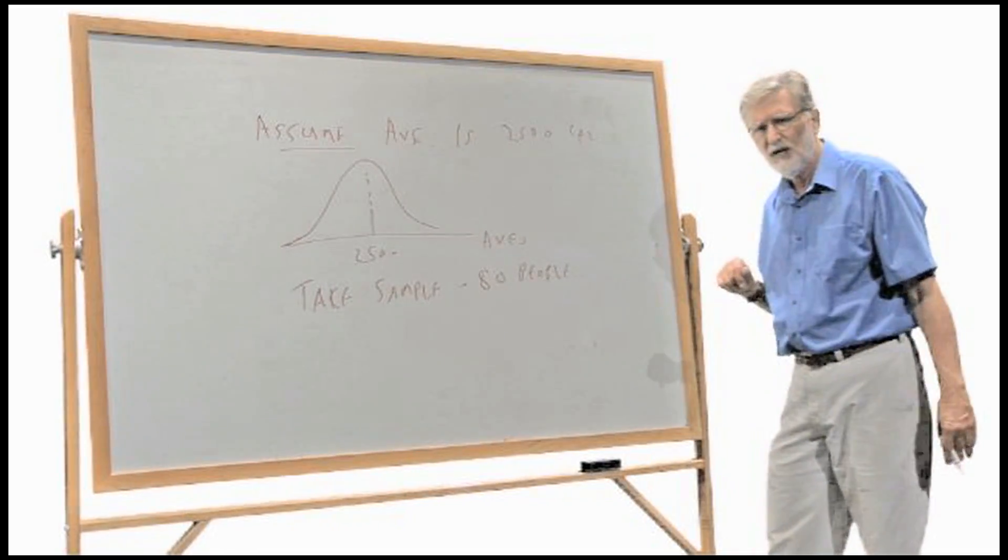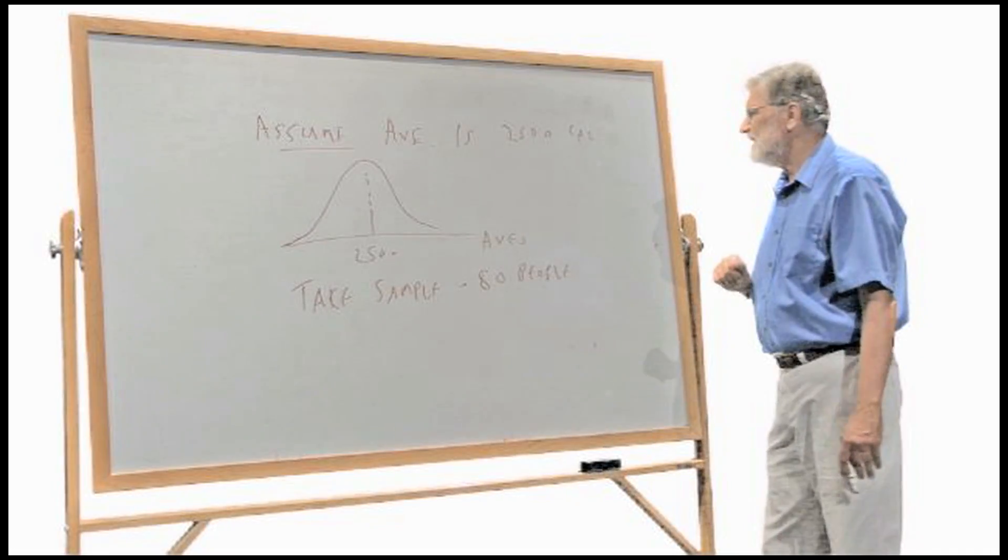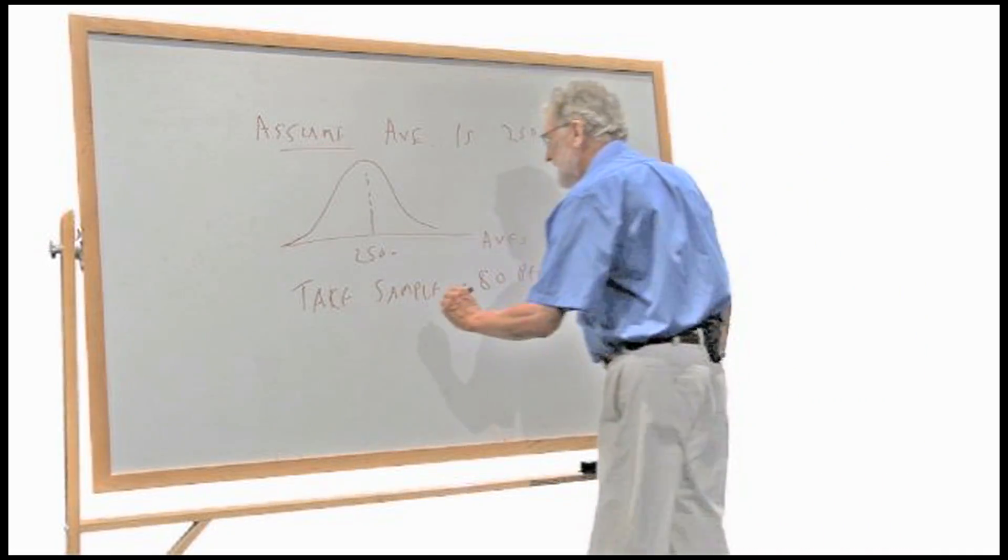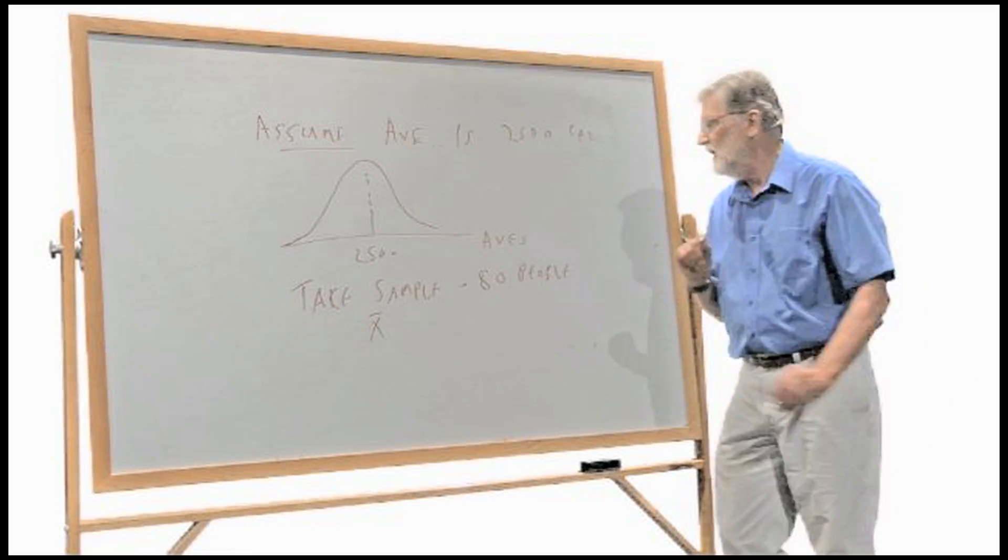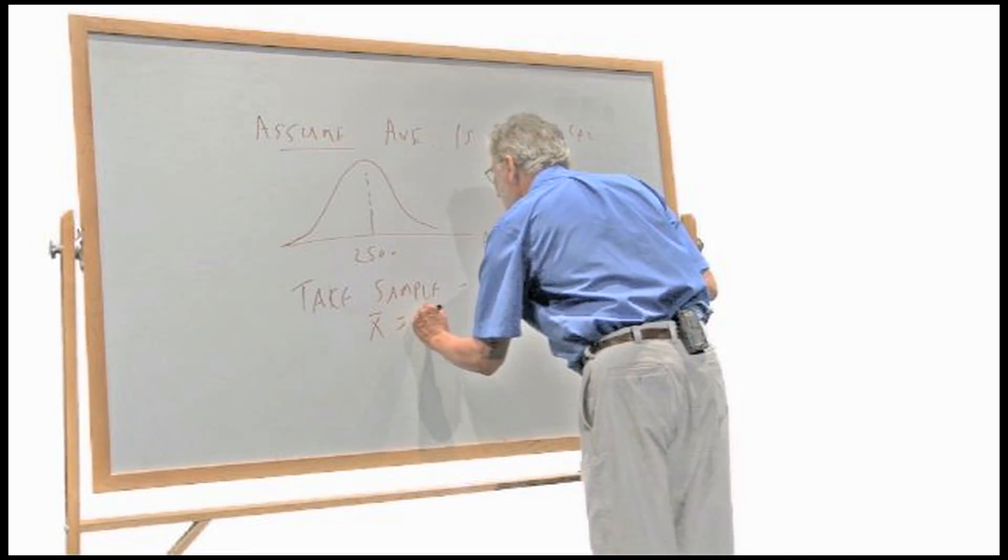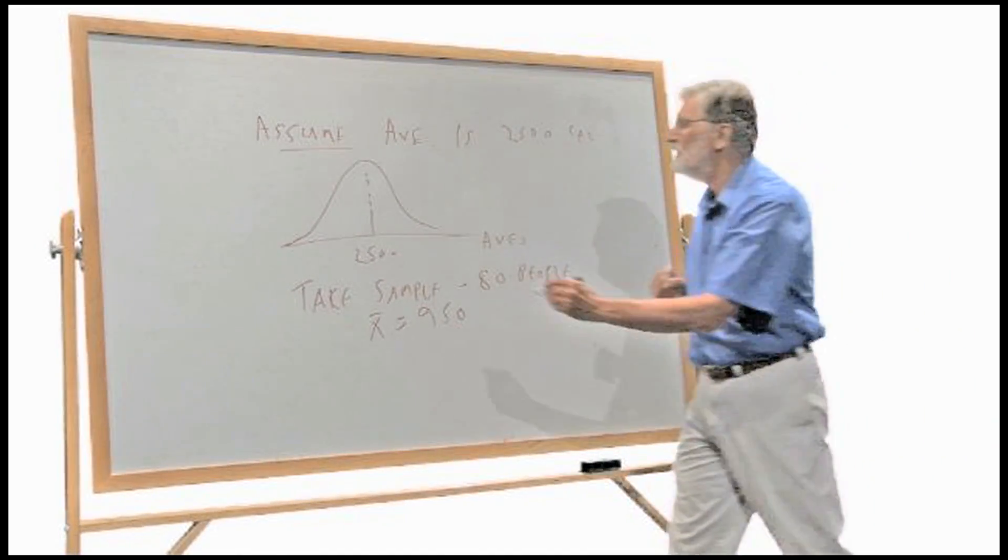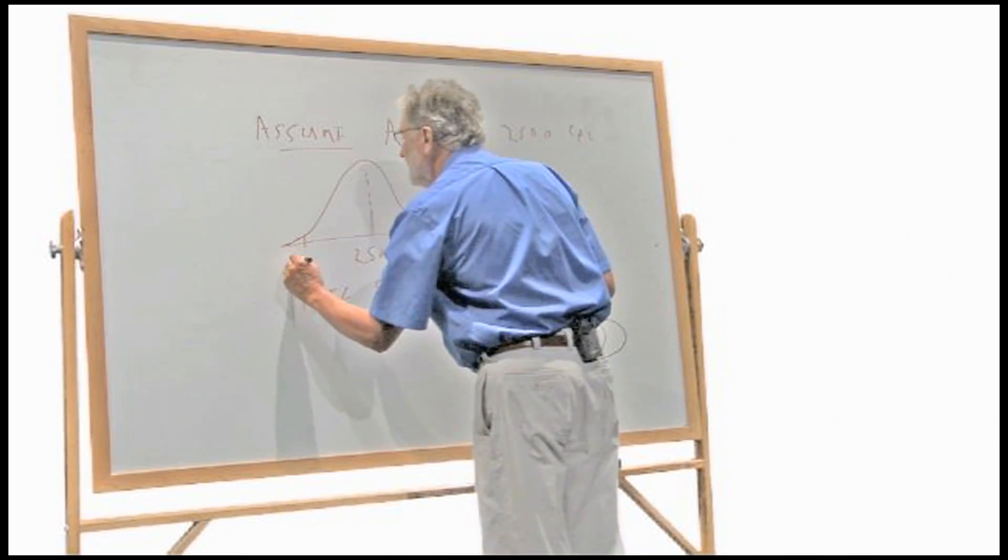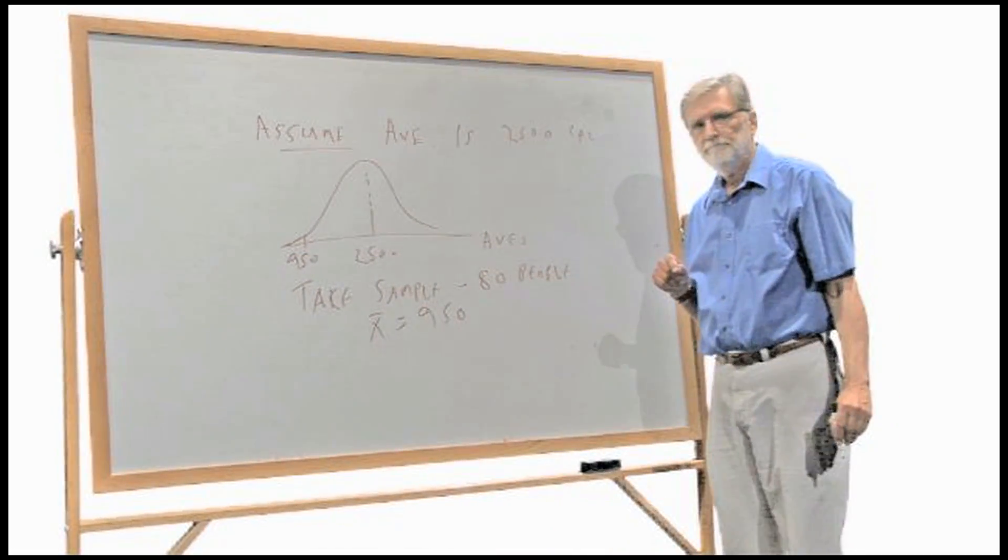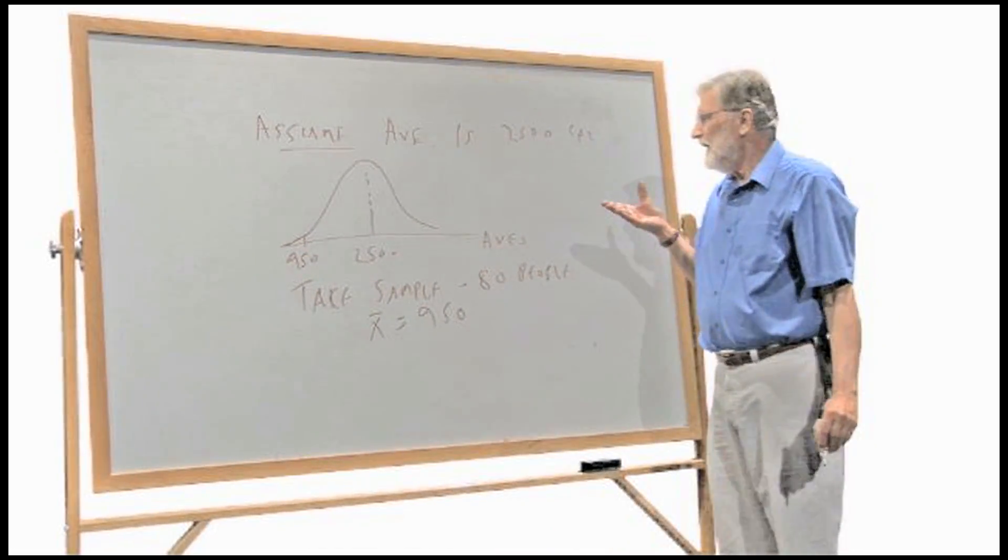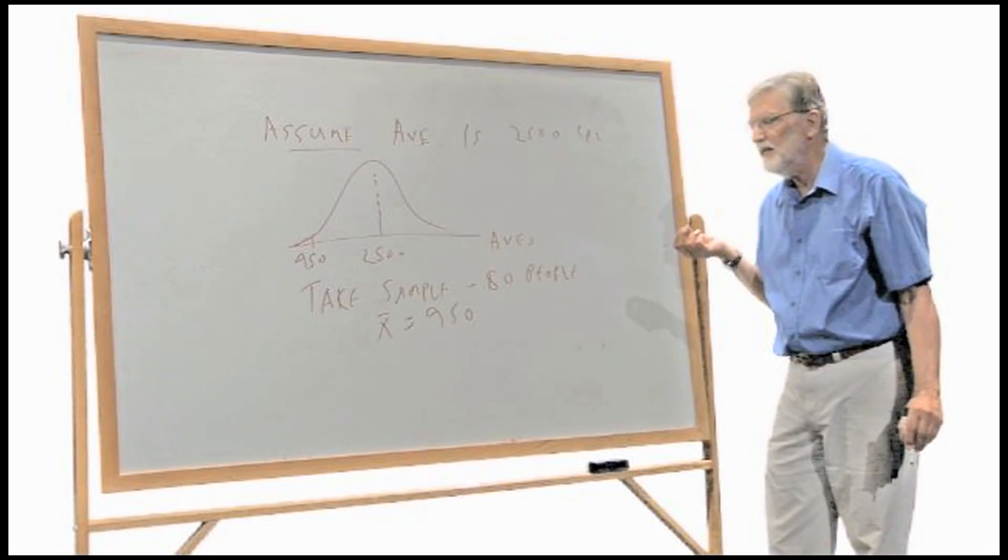There's a historical reason for that, I might talk about it in another episode. So anyway, suppose you take this sample of 100 people and your sample average in just this one case is 950 calories. Way over here. Way over here. Well, here's where the basic philosophy of statistics comes into play.